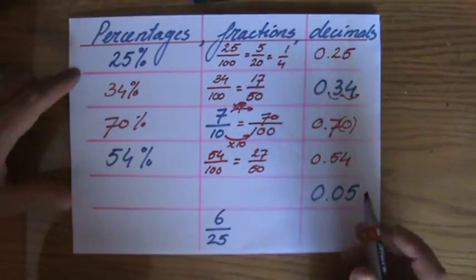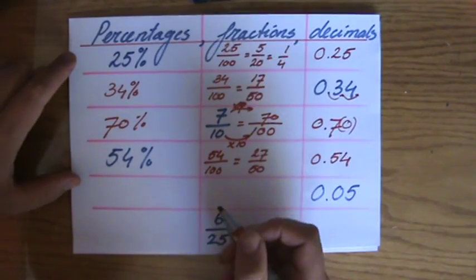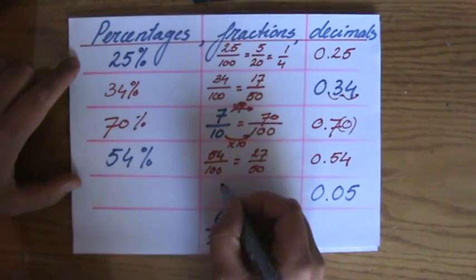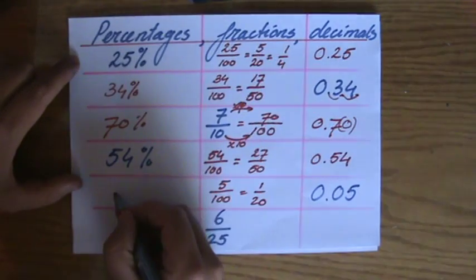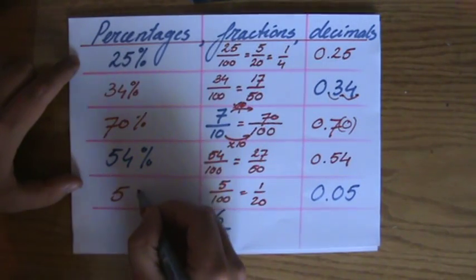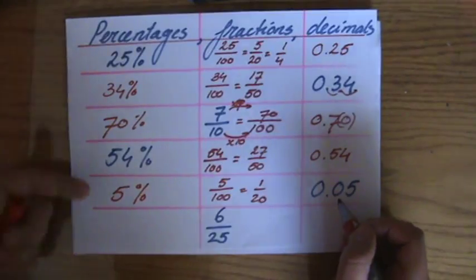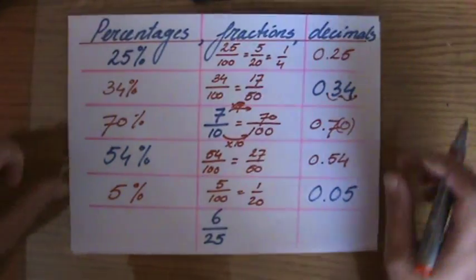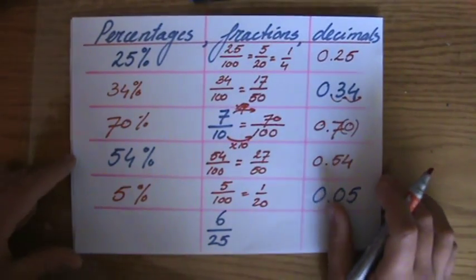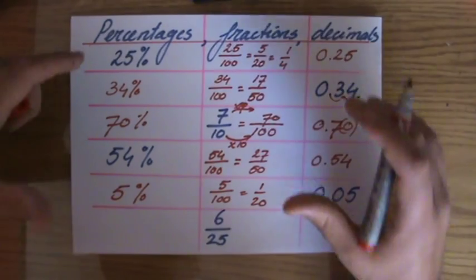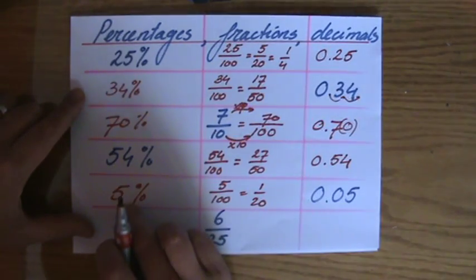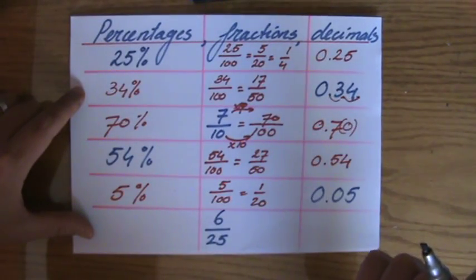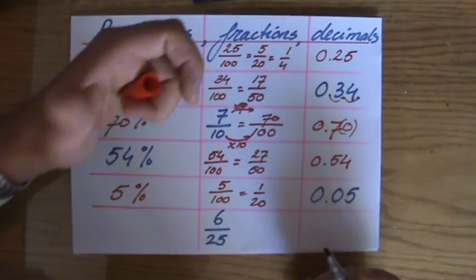Now, always be a little bit careful here. 0.05 — that is 5 hundredths, so 1 out of 20. And the percentage is 5%. A very commonly made mistake is writing 50% — but it's not 50%: 50% would be 0.5. From now on, I'm sure you won't make that mistake.